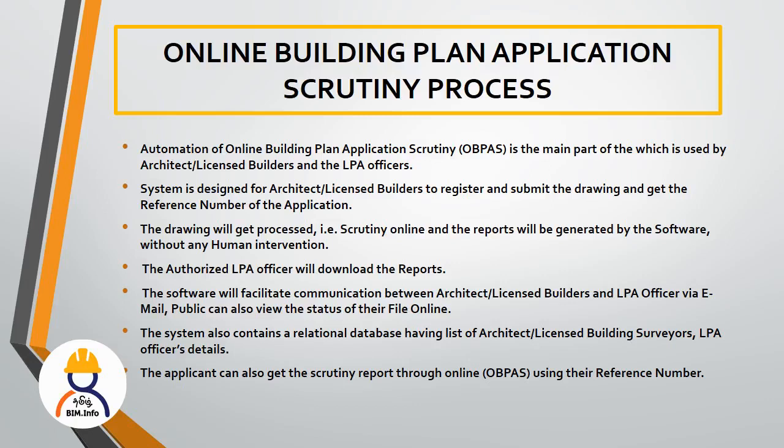In the EDCR software, the license builder, authorized LP officer, and licensed surveyor are involved. After the process, the plan may be rejected. The LP officer will send the result to DTCP. Then the architect will register on the DTCP website. The builder result is sent to the DTCP website, and the result is sent via email.